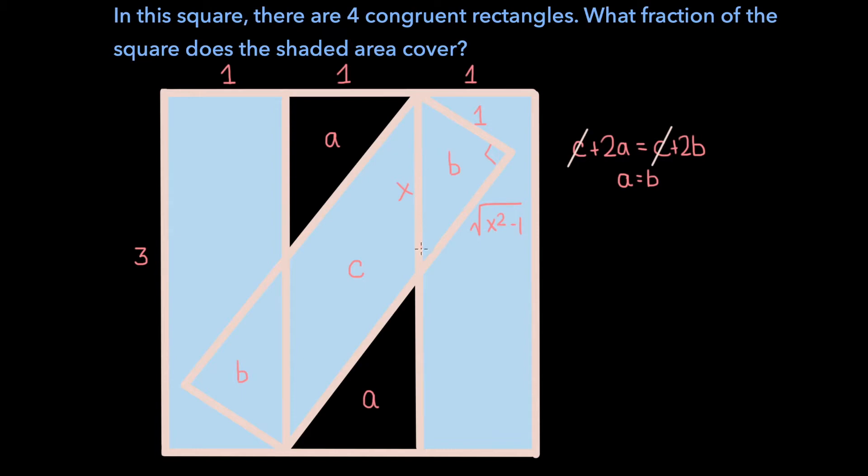Now since we've called this length x, we know that the length of this leg in this triangle must be 3 minus x. We also know that the length of this leg is 1, since it's the width of one of the rectangles. And so now we can express the area of both of these triangles in terms of one variable, which is x.